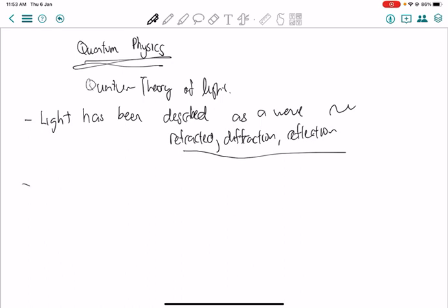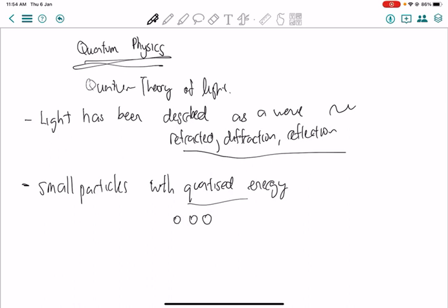But then, after numerous experiments in the 20th century, modern scientists found out they actually like to be explained as just small quantities, small particles with quantized energy. That's where this word quantum comes from, essentially meaning that these particles, these light particles which we call photons, they carry energy. Photons are actually massless but they carry energy, and these kind of energies are called quantums of energy.